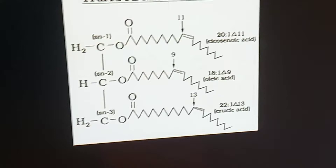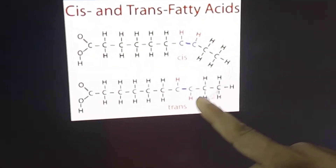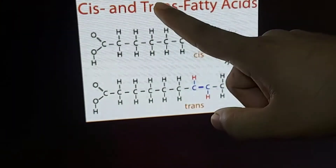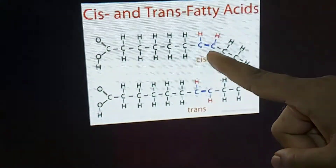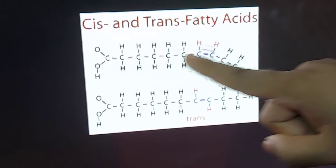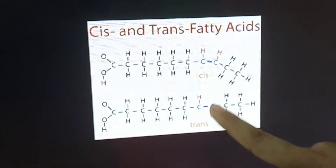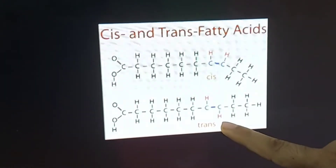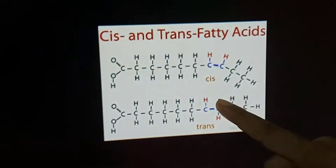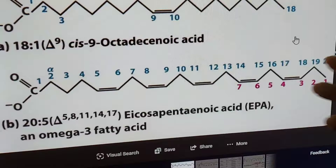Here you can see the bending of the fatty acids due to the double bond. There is also another important concept: cis and trans fatty acids. When two hydrogen atoms are on the same side of the double bond, this is known as a cis fatty acid. When the hydrogen atoms are situated on opposite sides of the double bond, that is the trans fatty acid.